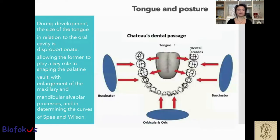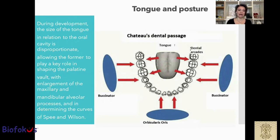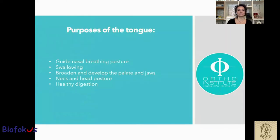During development, the size of the tongue in relation to the oral cavity is disproportionate, allowing the former to play a key role in shaping the palatine vault, with enlargement of the maxillary and mandibular alveolar process, and in determining the curve of Spee and Wilson.